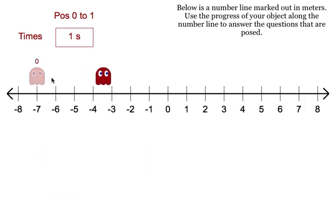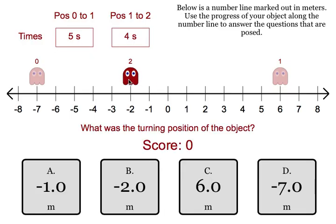Okay, so we're starting out. Our ghost started out at negative 7. He moves to the right all the way to positive 6 and then he comes back, finally coming to rest at negative 2.